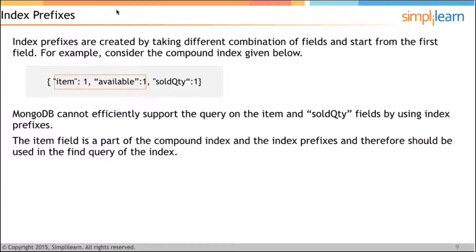Index prefixes are created by taking different combinations of fields, typically starting from the first field. For example, a compound index may have item in ascending order and available in ascending order as the index prefixes. MongoDB uses a compound index even if find queries are for index prefix fields — it uses indexes for querying the item field, the available field, and the sold quantity field. MongoDB cannot efficiently support queries on item and sold quantity fields using index prefixes if they are treated as separate indexes.